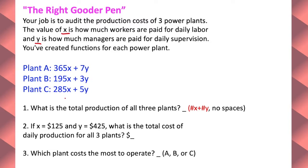So it looks like I'm talking about that. What is the total production of all three plants? Write it in terms of number times x plus number times y. So let's combine all the x values. Looks like that's what I'm doing.